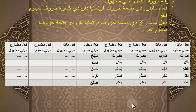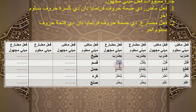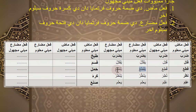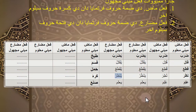Yaktulu, ini Mabni Maklum dari Kotala. Kalau dijadikan Mabni Majul: di-dhammah awalnya huruf pertamanya yaitu Ya, kemudian dibaca fathah huruf sebelum akhir yaitu Ta, menjadi Yuktalu. Yaqtoa, Mabni Majulnya: huruf pertamanya dibaca dhammah yaitu Ya, huruf sebelum akhir yaitu Ta dibaca fathah, menjadi Yuqtau. Yandhuru maklum, Mabni Majulnya Yundharu: di-dhammah awalnya, dan di-fathah huruf sebelum akhir yaitu Dha.